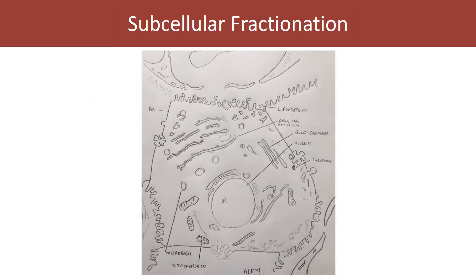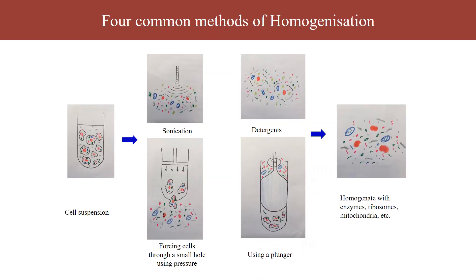Let us look at the task before us. Here is a cell which is very nicely drawn. The task is to rupture the cell membrane in such a way that the cell organelles come out of the cell without damage, because we want to separate them using differential centrifugation. The process of isolation of these cell organelles is called fractionation.